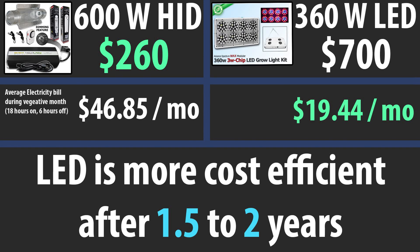In this video we're going to compare running a 600 watt HID to its comparable 360 watt LED. With both of these lights you're going to have about the same grow area. We calculated that the HID during a vegetative state would cost someone about $46.82 on average, and for the LED we calculated it would cost about $19.44. So during a vegetative state with 18 hours on and 6 hours off, you're going to be spending on average $27.41 more per month with the HID than the LED.